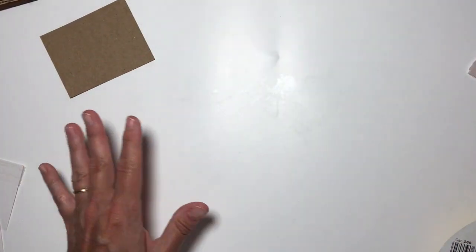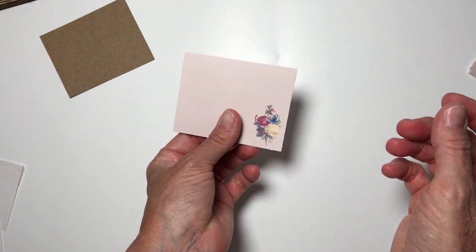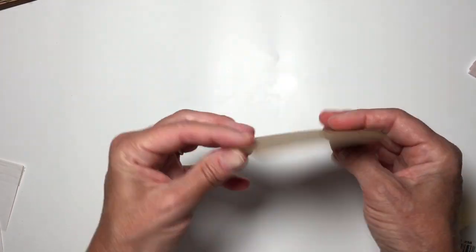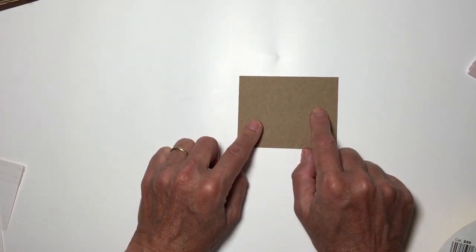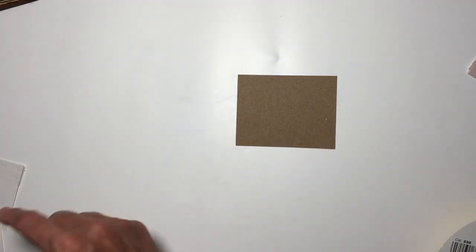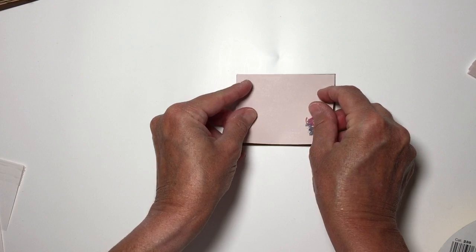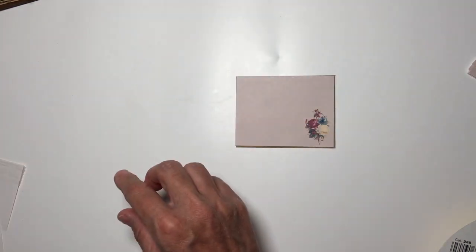By the time you get done making a bunch of these, the first ones you've done will be dry. I grabbed a piece of cardboard and cut it out. It is also the same size as the sticky notes, so we're just going to simply start stacking them up on the cardboard.